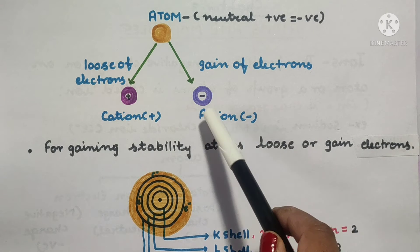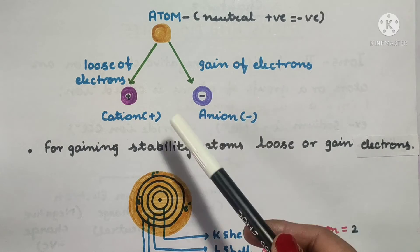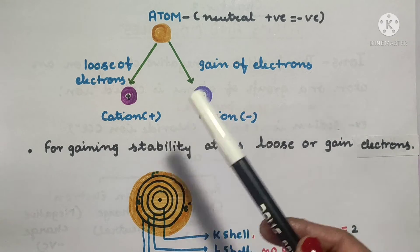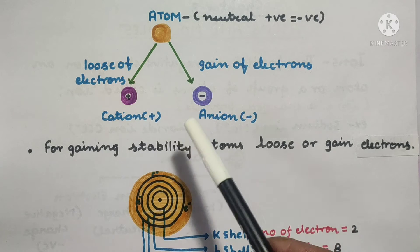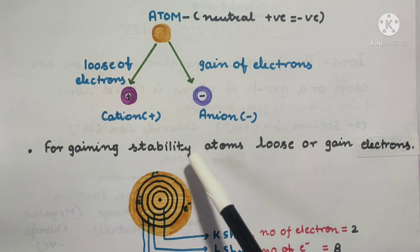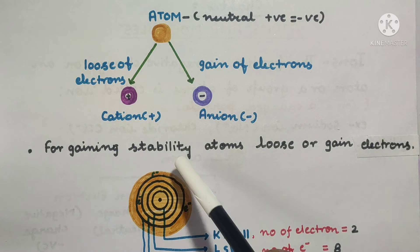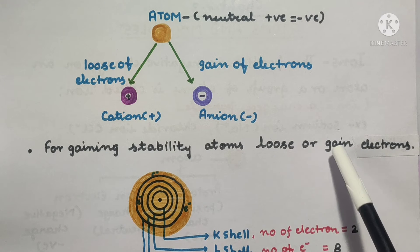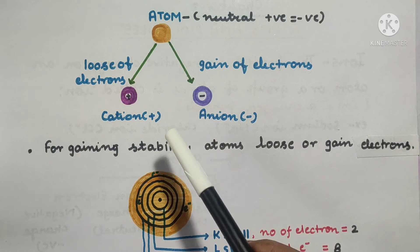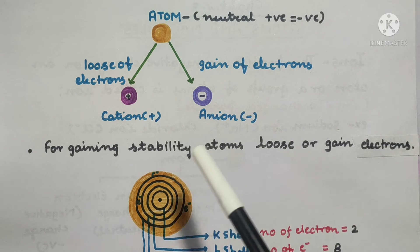On the other hand, if an atom gains electrons, the negative charge increases. We call this an anion. The atom is neutral, but for gaining stability, atoms lose or gain electrons.